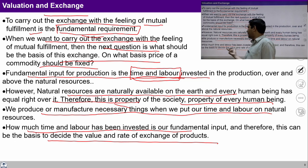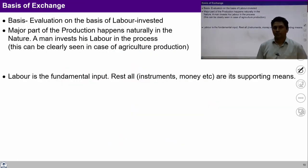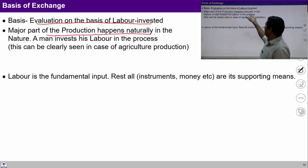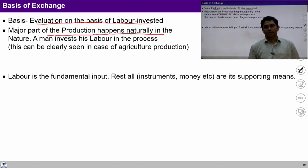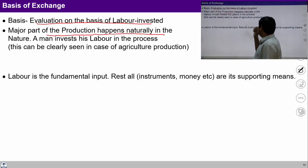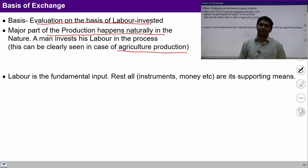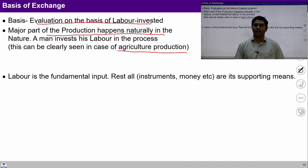The basis of exchange is evaluation on the basis of labor and time invested. A major part of production happens naturally in nature due to virtue of physical and natural laws. A human has to invest labor and time in this process. This can be seen easily in agricultural production — once a farmer invests his time and labor in the field, the rest happens naturally. A farmer devotes his time, puts his effort in sowing the seeds, giving water — the resting happens naturally.